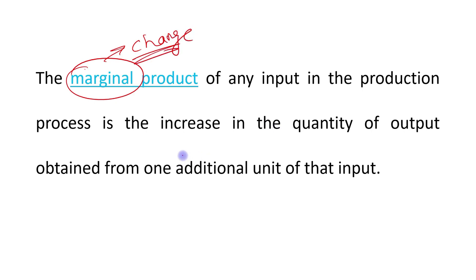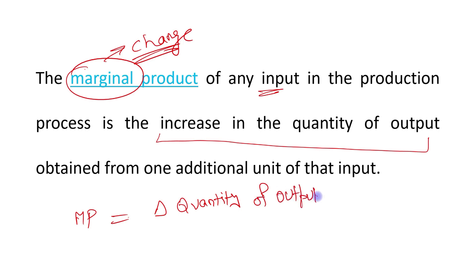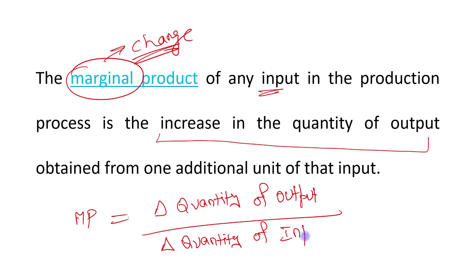So if we want to find the marginal product of any input, the formula is: marginal product equals change in quantity of output divided by change in quantity of input.